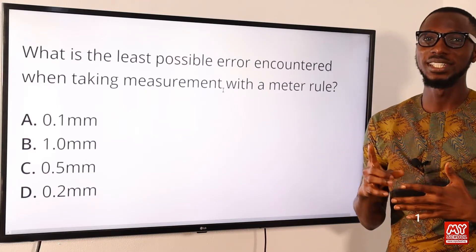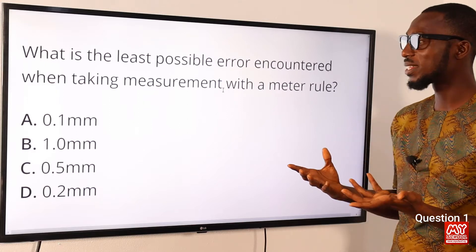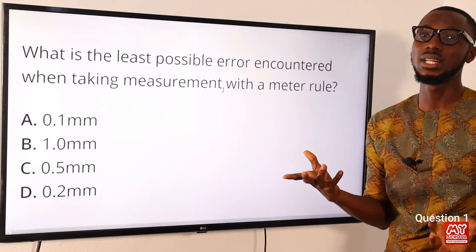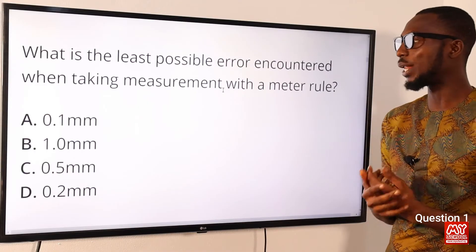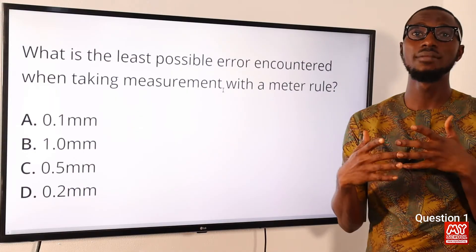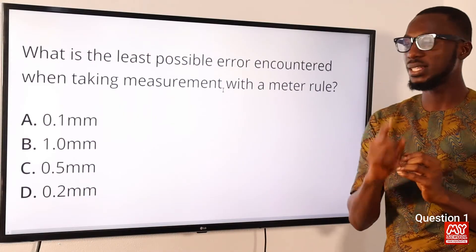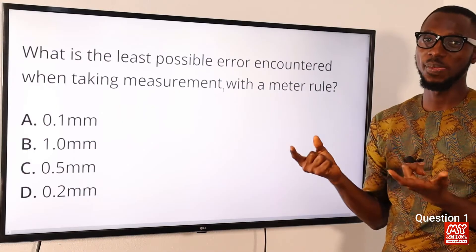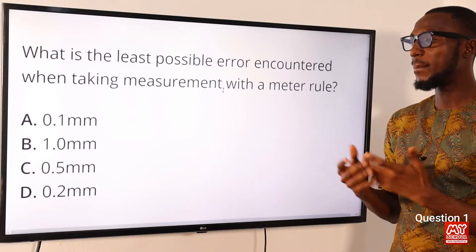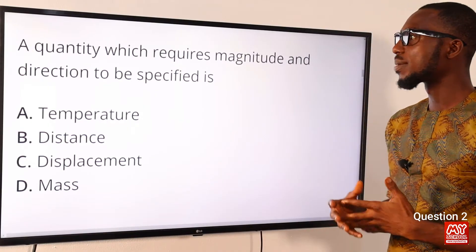Question one: what is the least possible error encountered when taking measurements with a meter rule? When talking about a meter rule, the estimated uncertainty is half of the smallest possible value. Using a meter rule, the smallest value is 0.1 centimeter or one millimeter. So the estimated uncertainty will be half of one millimeter, which is 0.5 millimeter. The correct option is option C: 0.5 millimeter.